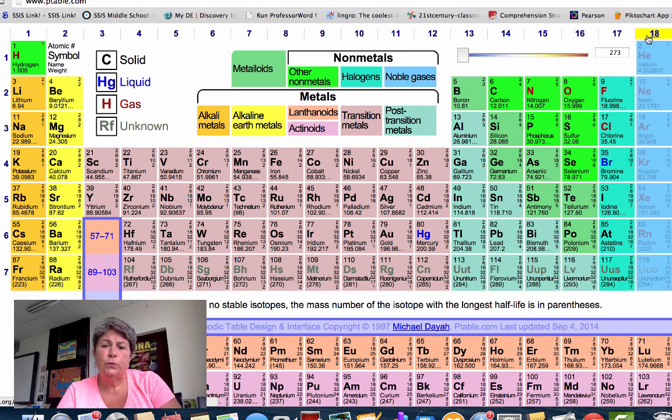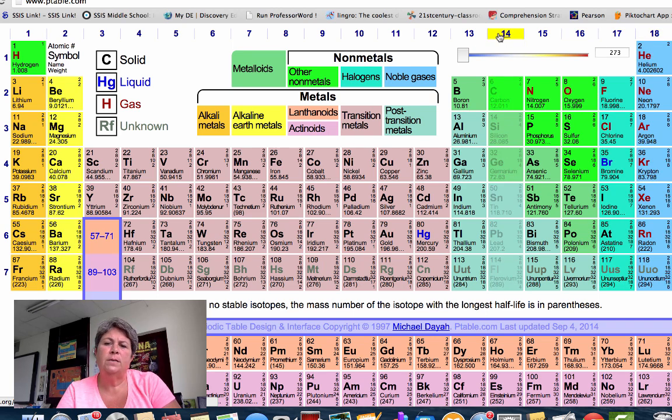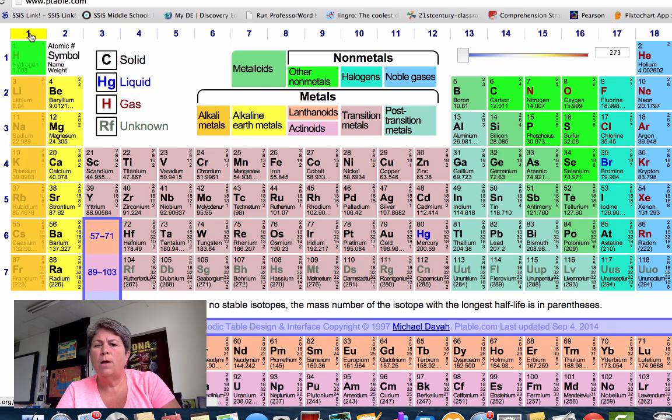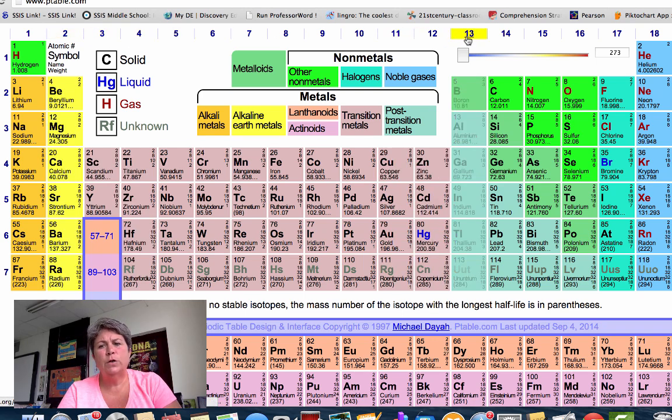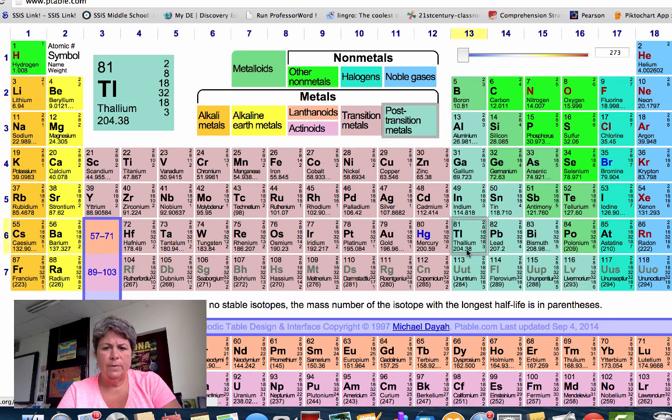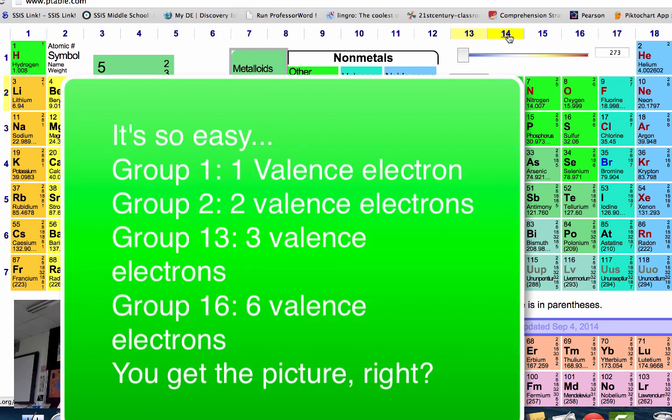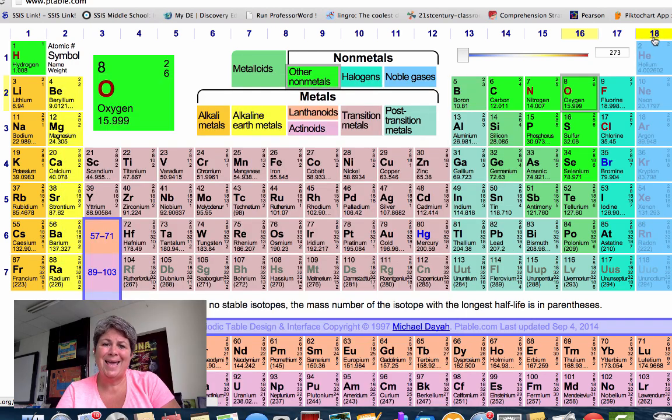Now, these group numbers are really helpful because for groups 1 and 2, all of the elements in group 1 have one valence electron, and group 2 have two valence electrons. Then if we jump over to 13 through 18, group 13 has three valence electrons, 14 has four, group 15 has five, group 16 has six valence electrons, group 17 has seven, and group 18 has eight.